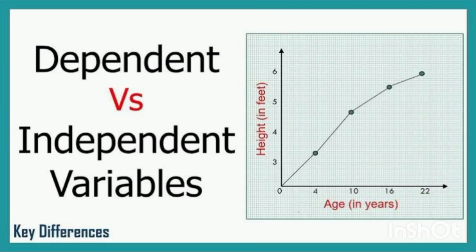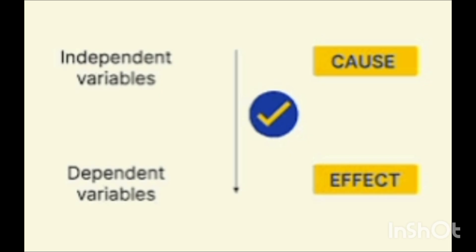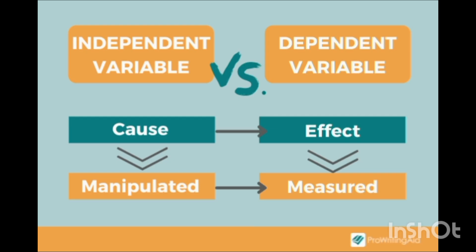We are going to discuss the differences between dependent versus independent variables. On the right side you can see our graph, which explains the relation between age and height. Dependent variables are like an effect and independent variables are like a cause, so there is a relation between cause and effect — cause is independent and effect is dependent.